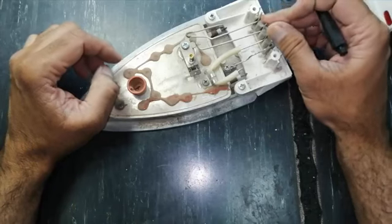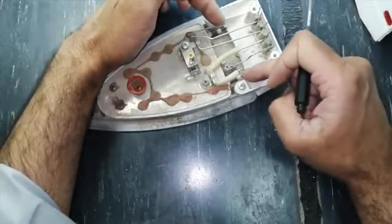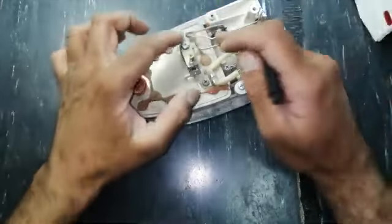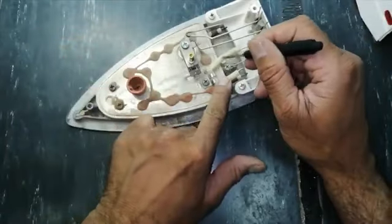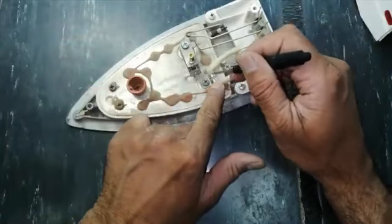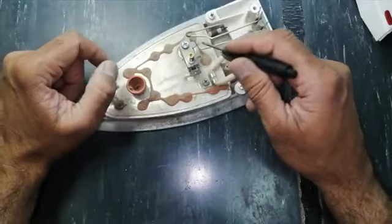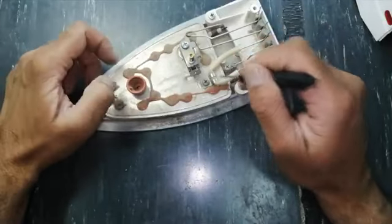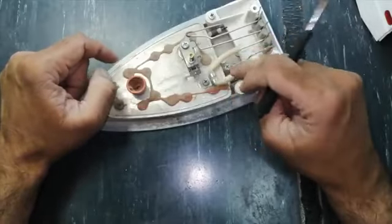If we don't find the continuity between these two points, we see the resistance. And thermostat is working good. But the path is not completing due to this fuse. You can replace this fuse. It is temperature sensitive fuse. So we have to replace this. And it is safety. Never bypass this safety.